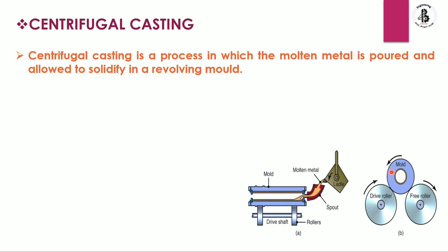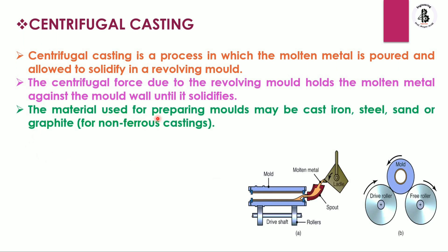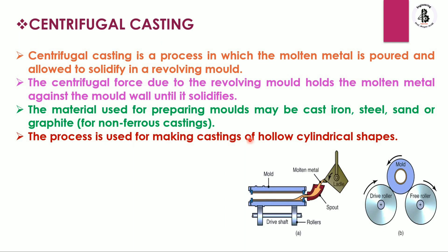By this process you can make a hollow casting without using a core — that is the main advantage. The centrifugal force due to the revolving mold holds the molten metal against the mold wall until it solidifies. The material used for preparing molds may be cast iron, steel, sand, or graphite for non-ferrous castings. The process is used for making castings of hollow cylindrical shape.